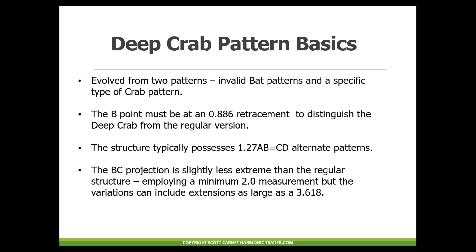The B point at the 0.886 retracement is really the distinguishing point versus the regular version. We still look at a structure that's extended, typically using the 1.27 AB equals CD alternate pattern, but the BC projection can be less extreme. We really want to look for those measurements that best complement the 1.618 structure. Depending on how the deep crab lines itself up, it can have a BC as low as 2.0 or as much as a 3.618.